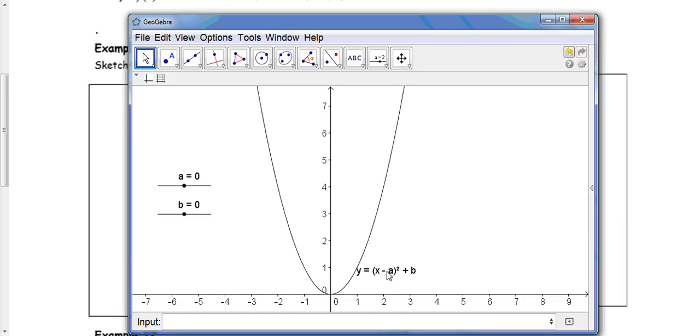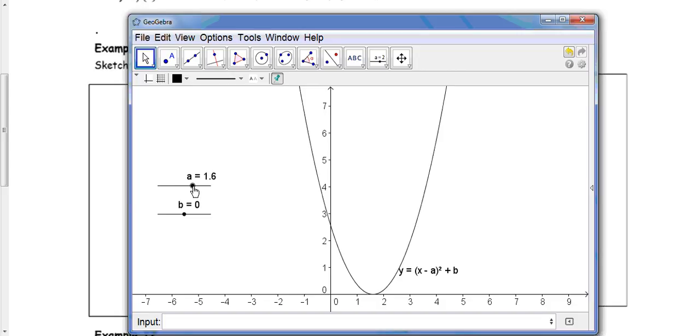So think about what you're expecting to see as I increase a. We've got x minus a, so as a becomes 1 and then 2, we should see the graph moving to the right. And we do.